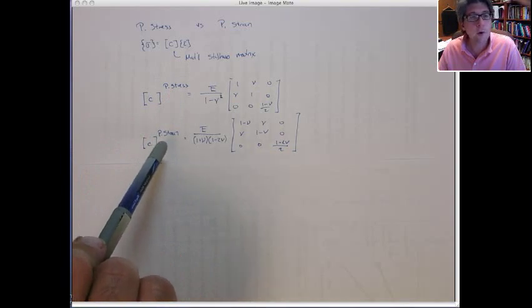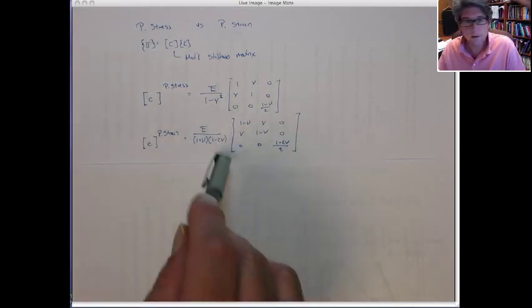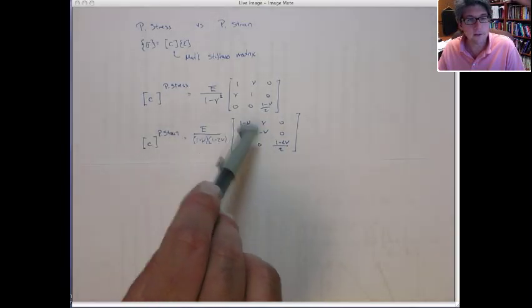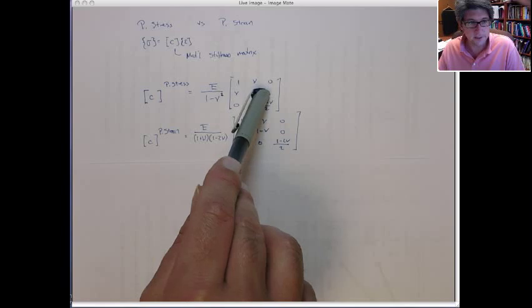So some programs like Abacus and LSDyna and I believe ANSYS have separate plane strain elements that will actually automatically use the Poisson ratio and Young's modulus to compute this material stiffness matrix as opposed to the plane stress one.